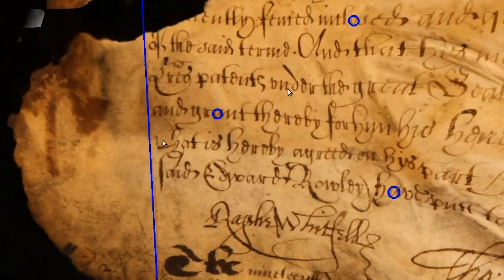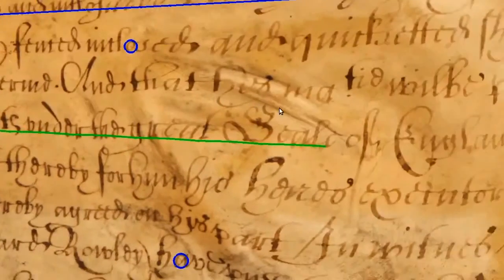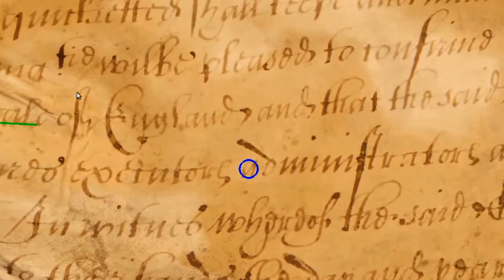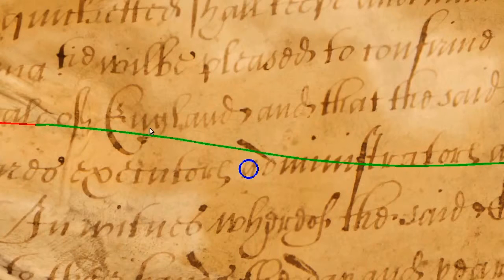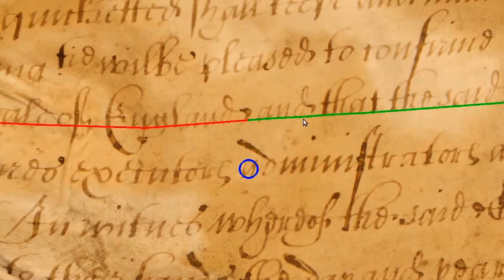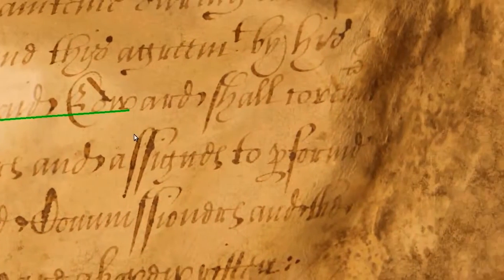Detecting text lines and borders is complicated by the distortion and discolorations. These can cause automatic line tracing methods to fail and jump between different text lines. Therefore, we use a semi-automatic approach, enabling the user to correct wrong estimates.